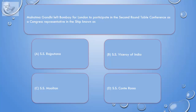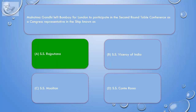Question: Mahatma Gandhi left Bombay for London to participate in the second Round Table Conference as a Congress representative on the ship known as: A. S.S. Rajputana, B. S.S. Viceroy of India, C. S.S. Moulton, D. S.S. Conte Rosso. Correct answer is A. S.S. Rajputana.